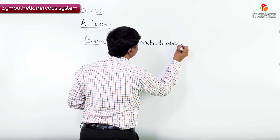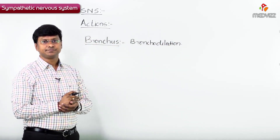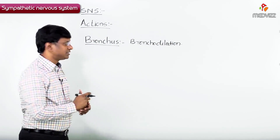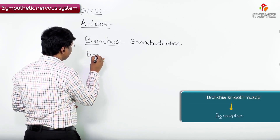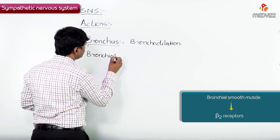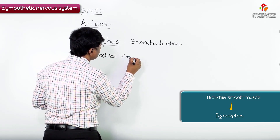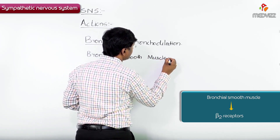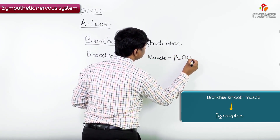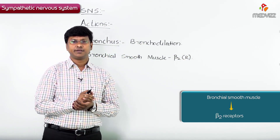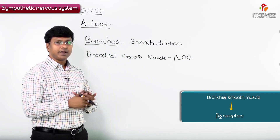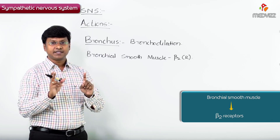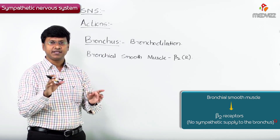Now let me discuss how it will cause bronchodilation. The receptors present within the bronchial smooth muscle are the beta-2 receptors. An important point to remember here is that bronchial smooth muscle contains beta-2 receptors, but there is no sympathetic supply to the bronchus.